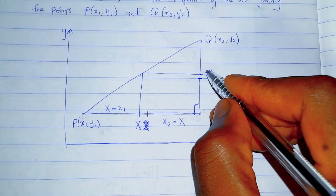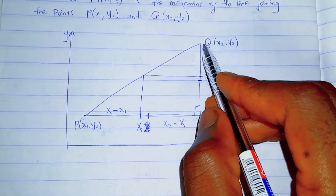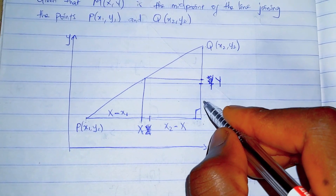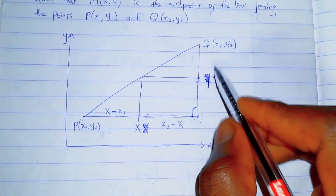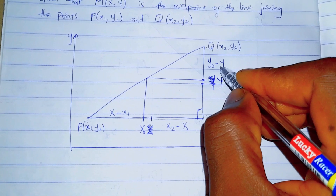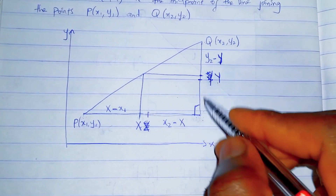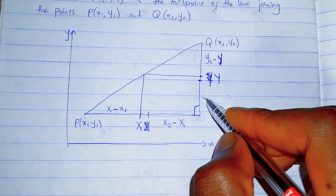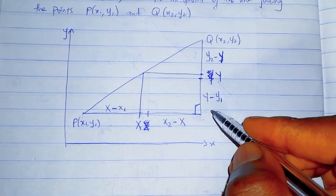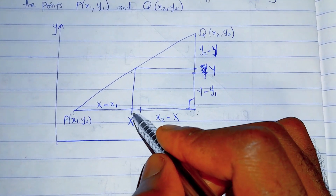For y: if this is y2 and this is y1, the same case goes. The distance here becomes y2 minus y, and the distance from y to y1 becomes y minus y1.